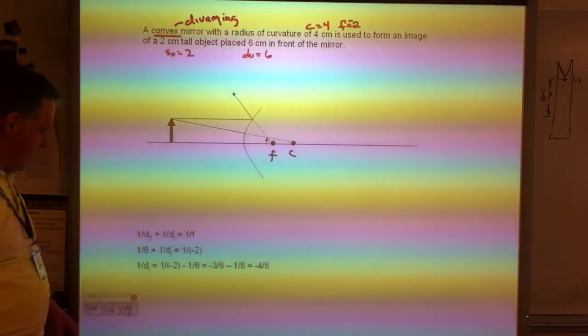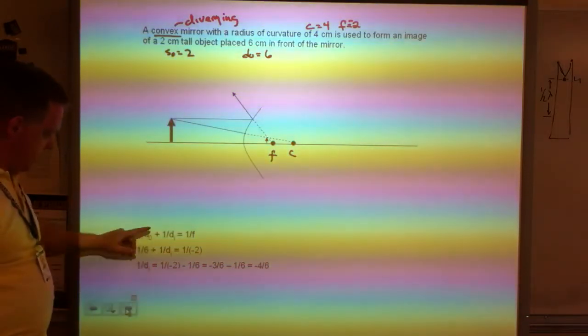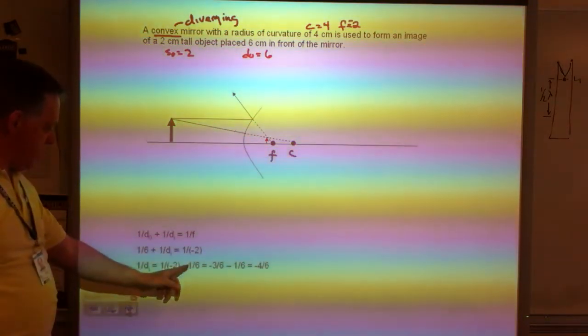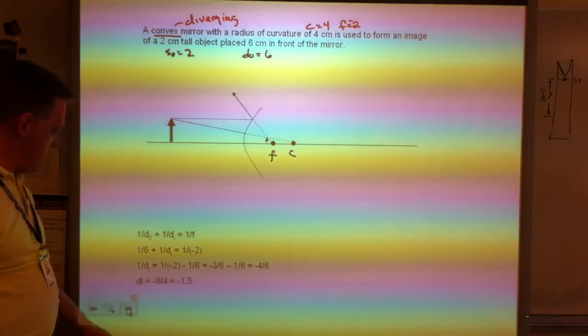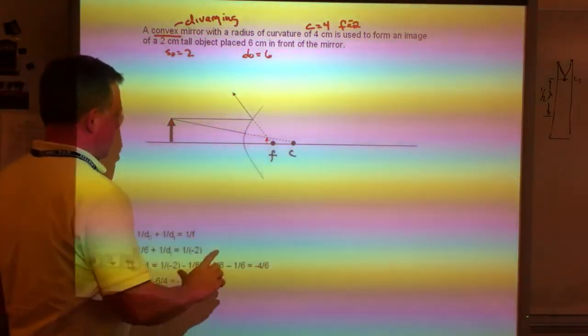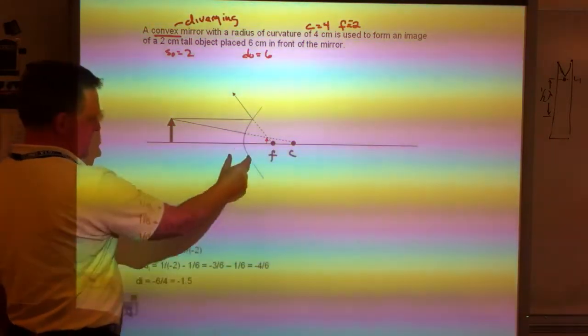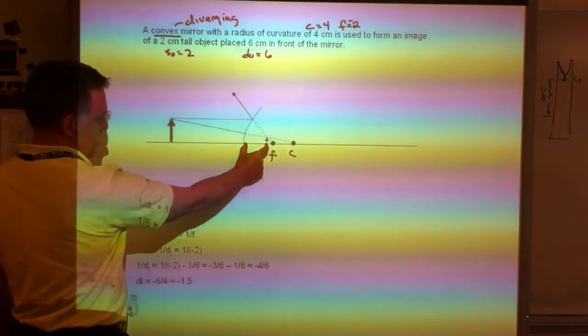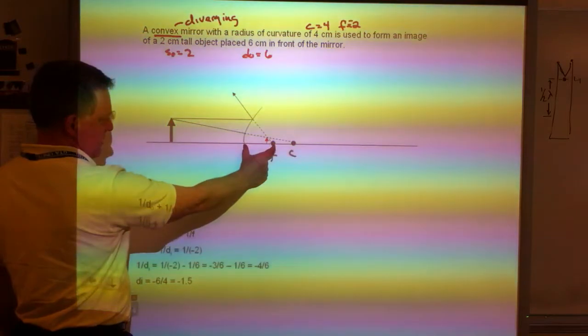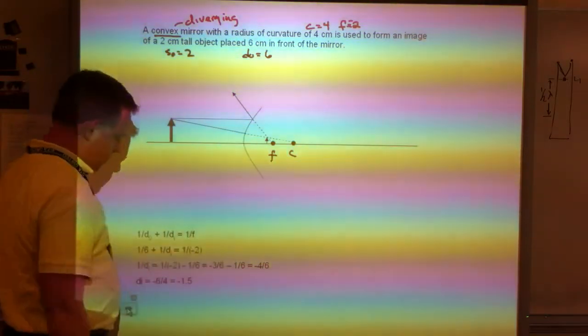My next step, 1/DI, I'm going to subtract the 1/6 from the other side, and I end up with DI is negative 1.5. Let's see if that makes sense. We said this distance was negative 2. DI is the distance from the mirror to the image, negative 1.5. That kind of makes sense. If this is negative 2, that could be negative 1.5.